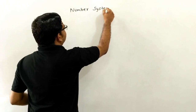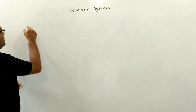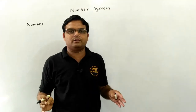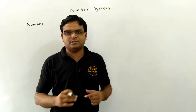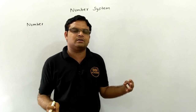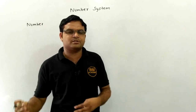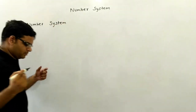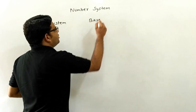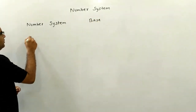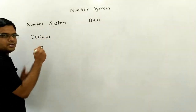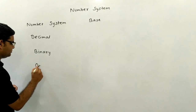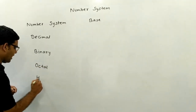So in this part, I am discussing the number system. In this video, I am only telling you about the basic concepts of the number system. In the future video, I will discuss how we can convert one number system into another. I am writing some of the basic number systems which we have to study for your exam point of view. First is the decimal number system, second is the binary number system, third is the octal number system, and the fourth is the hexadecimal number system.